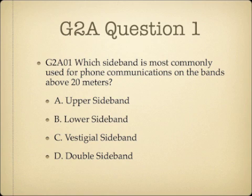Question 1. Which sideband is most commonly used for phone communications on the bands above 20 meters? A. Upper sideband. B. Lower sideband. C. Vestigial sideband. Or D. Double sideband.